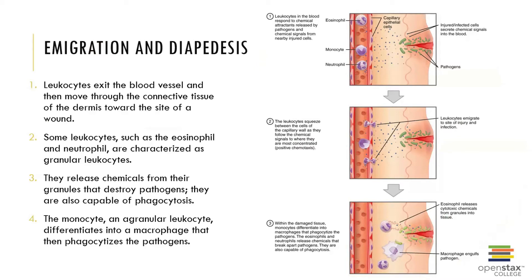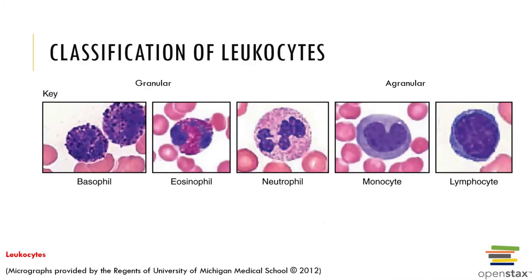White blood cells can leave circulation and move about via diapedesis — they exit the blood vessels and move through connective tissue toward the site of injury. Leukocytes like eosinophils and neutrophils have granules and can release chemicals from those granules to destroy pathogens. They are also capable of phagocytosis, which is essentially pathogen eating, bringing us back to our study of tissue healing from earlier.